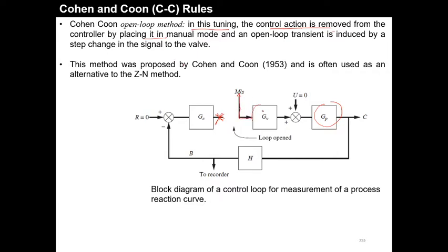Now we are going to control the same process manually. Whatever command is required for the valve, we will supply it manually. So first, in the closed loop, what we have to do is disconnect or remove the control action, fix it into manual mode, and record the open loop transient response.